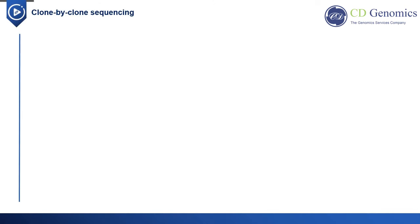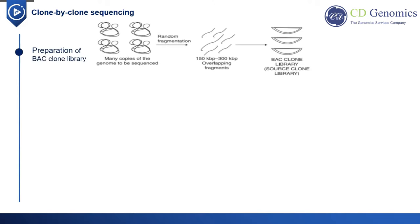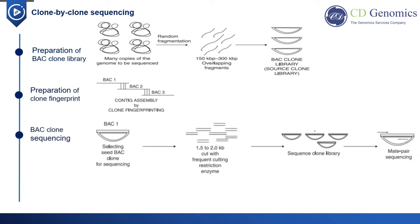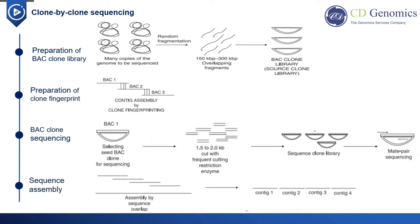The hierarchical shotgun method was once adopted by the HGP consortium. It can generate high-density maps, making genome assembly easier. It generally includes four steps: preparation of a BAC clone fingerprint map, selection of a minimally overlapping clone set, BAC clone sequencing, and sequence assembly. However, this method is time-consuming and costly, so it is seldom used at present.